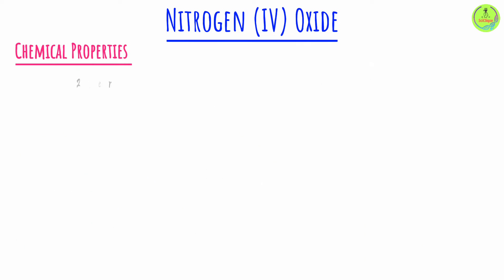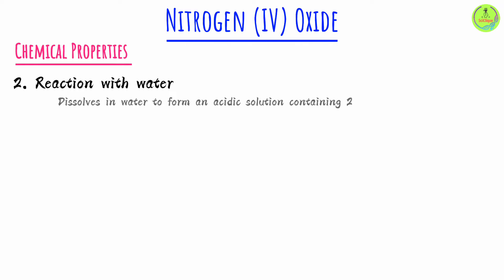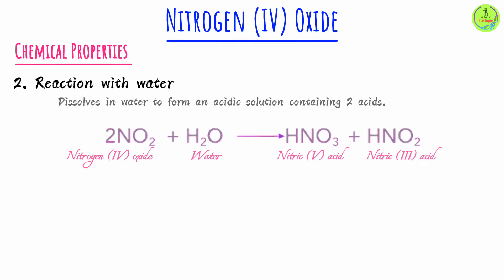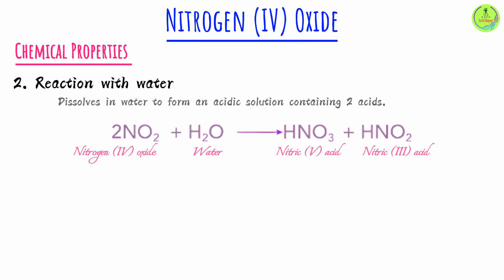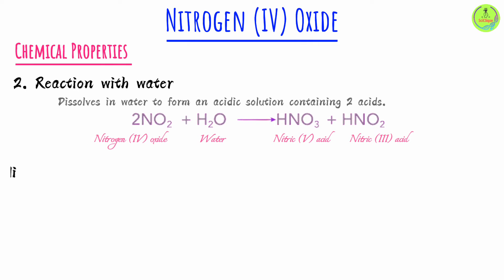The next chemical property is its reaction with water. Nitrogen dioxide is highly soluble in water and dissolves to form an acidic solution. The acidic solution is actually a mixture of two acids: nitric acid (HNO₃) and nitrous acid (HNO₂).